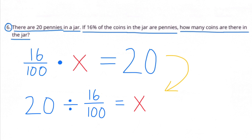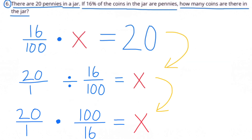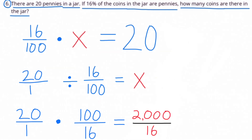Twenty is the same as twenty over one, so I can rewrite the equation as twenty over one divided by sixteen over one hundred equals x. When dividing fractions, we multiply by the reciprocal, so twenty divided by sixteen hundredths is the same as twenty times one hundred over sixteen. Multiplying straight across: twenty times one hundred is two thousand, and one times sixteen is sixteen, giving us two thousand over sixteen.